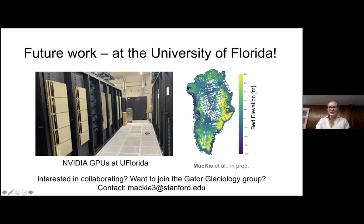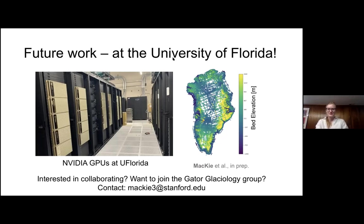This is work I will continue at the University of Florida. I'm particularly excited because UF has recently upgraded their supercomputer with NVIDIA hardware, making UF now the most powerful supercomputer in academia, making it an ideal environment for doing large-scale ice sheet machine learning problems. So if any of this is something you're interested in, or you know anyone who wants to do a PhD in machine learning and glaciology, don't hesitate to contact me. I would love to hear from you. Thank you.